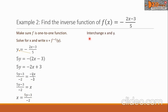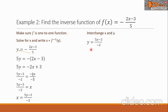For Step 3, we interchange x and y. We copy the function and change all x into y and all y into x. So x becomes y, and y becomes x. The new function is y equals 5x minus 3, all over negative 2. We change this y into function notation — this time it will be the inverse: f inverse of x equals 5x minus 3, all over negative 2. This is the inverse function we are looking for.